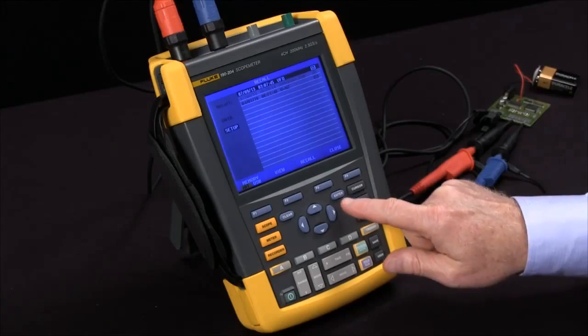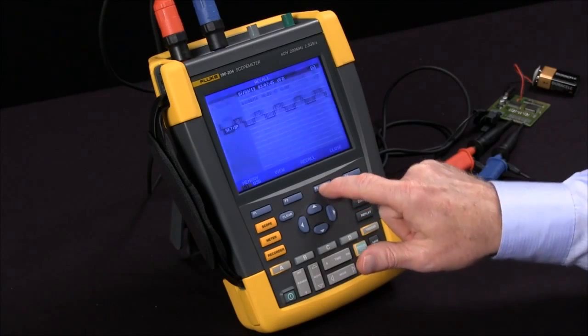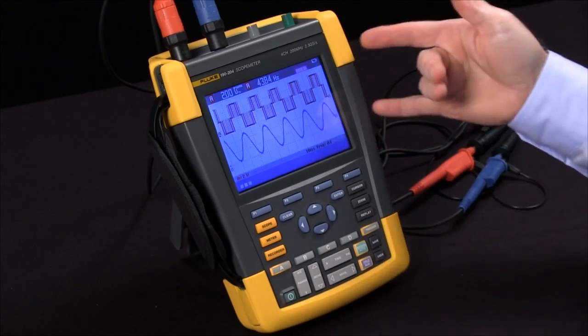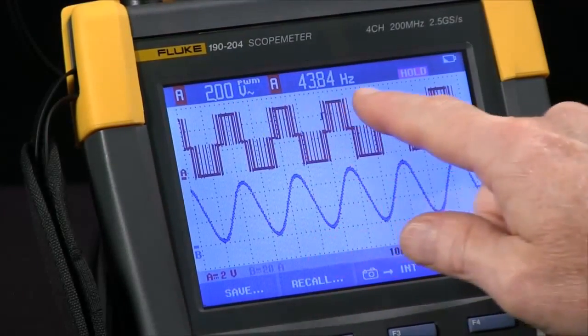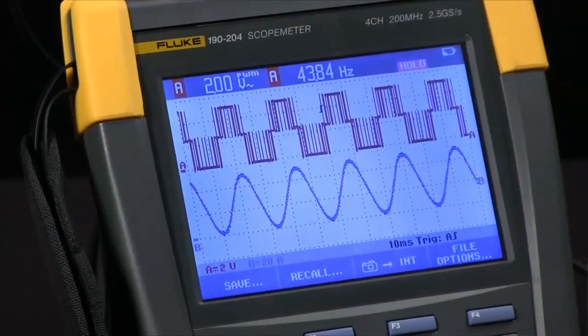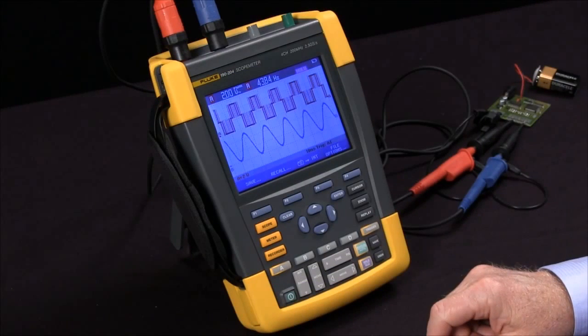VFD is highlighted, so I'll press F3 for recall, and I'm right back to where I was. My pulse width modulated voltage, and my frequency for channel B. And that's how you save waveform and setup on the Fluke Scope Meter.